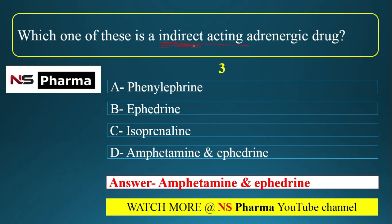Mixed-acting agonists act both directly and indirectly — ephedrine is a mixed-acting agonist. So in the question, amphetamine is indirect-acting, while ephedrine is mixed-acting (acts both directly and indirectly). The answer is option D: amphetamine and ephedrine, as both have indirect action.